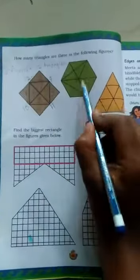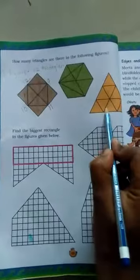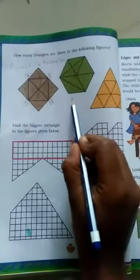So let's see. In the second figure and third figure, how many triangles. Count and write down here. Okay.